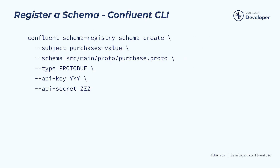Alright, let's get back to the registration process. There are several methods at your disposal for registering a schema. You can use the Confluent CLI, the Schema Registry REST API, the UI on Confluent Cloud, or the Maven and Gradle plugins we discussed earlier. The world is your oyster.